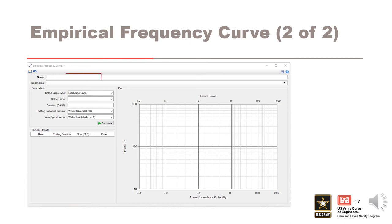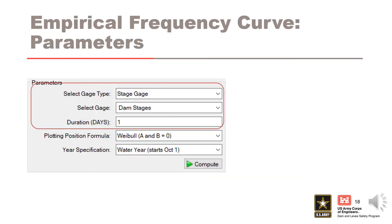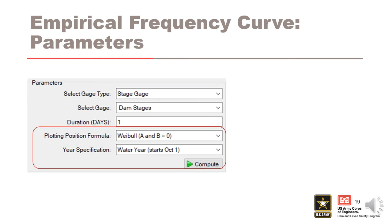Similar to all new windows in RMC-RFA, you start with a name and a description, then move on to the parameters. Select a gauge type — in this instance, I used a stage gauge. After you have a gauge type, the gauges of that type are available from the drop-down menu under Select Gauge. The duration is a bit trickier. If your gauge is an inflow hydrograph, you should use the critical inflow duration because we want to use the volume for the same critical duration to compute the empirical flow frequency curve. If the gauge is a stage gauge, the duration should be set to one day because we want to use the daily stages to calculate the annual maximum empirical stage frequency curve. For this example, the duration is one day because we're using a stage gauge. Unless you have a reason to use a different plotting position formula, use Weibull, which is the default.